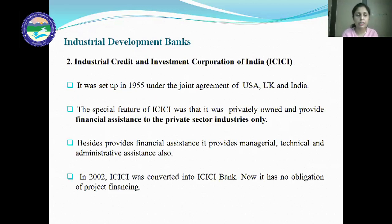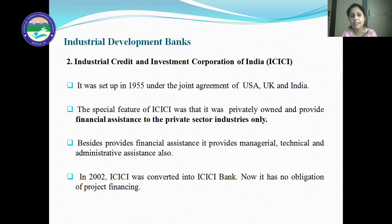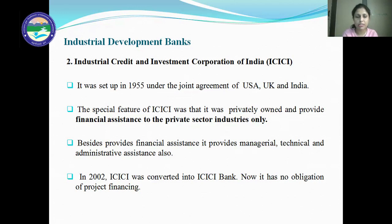The next development bank is the Industrial Credit and Investment Corporation of India — ICICI. It was set up in 1955 under a joint agreement of the USA, UK, and India. A special feature of ICICI was that it was privately owned and provided financial assistance to private sector industries only, whereas IFCI provided financial assistance to public sector industries. Besides providing financial assistance, ICICI also provides managerial, technical, and administrative assistance to industries.